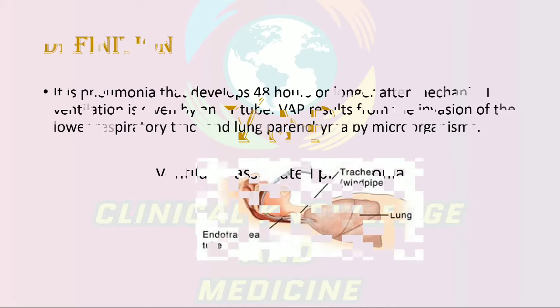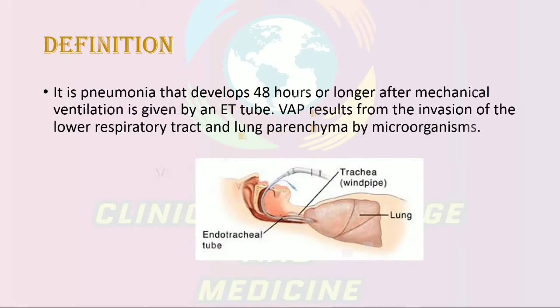Definition: Ventilator-associated pneumonia is pneumonia which develops 48 hours or longer after mechanical ventilation given by endotracheal tube, resulting from the invasion of the lower respiratory tract and lung parenchyma by micro-organisms.